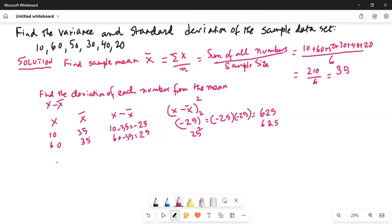Next number is 50, and the mean is still 35. 50 minus 35 will be 15. So the square will be 15 squared, which is 225. Next number is 30. The mean is 35. 30 minus 35 is minus 5. So we have minus 5 squared, which is minus 5 times minus 5, which is positive 25.